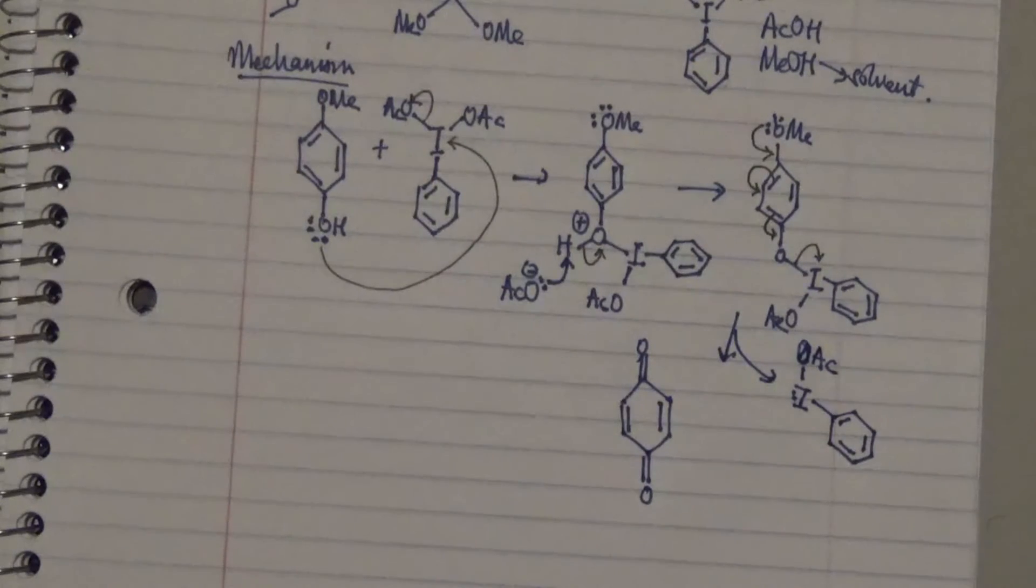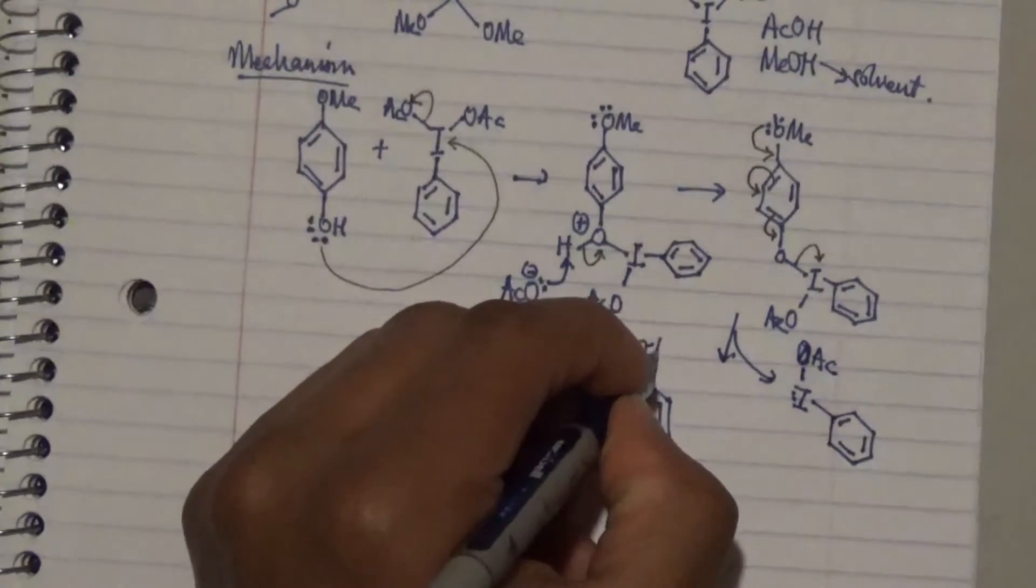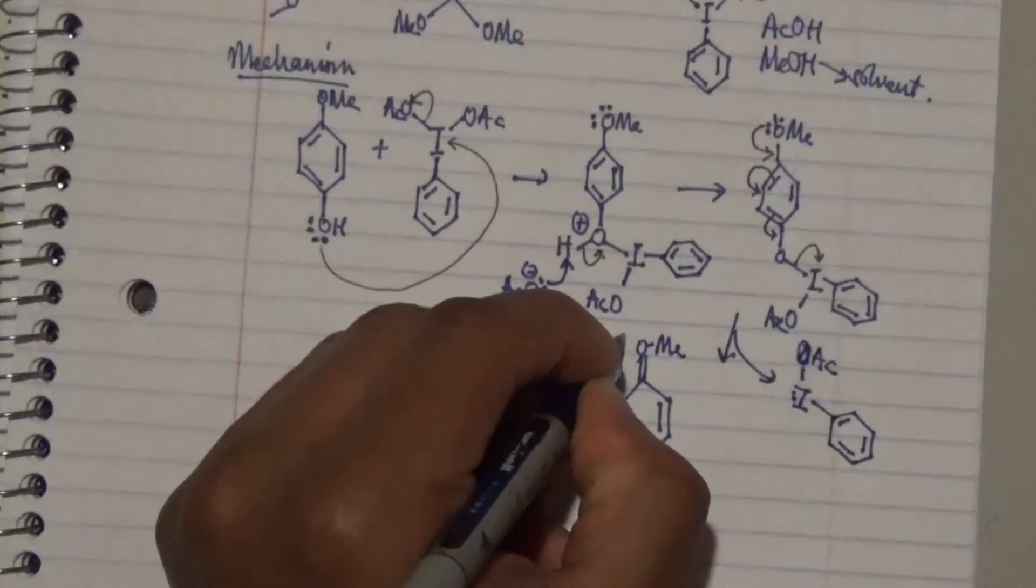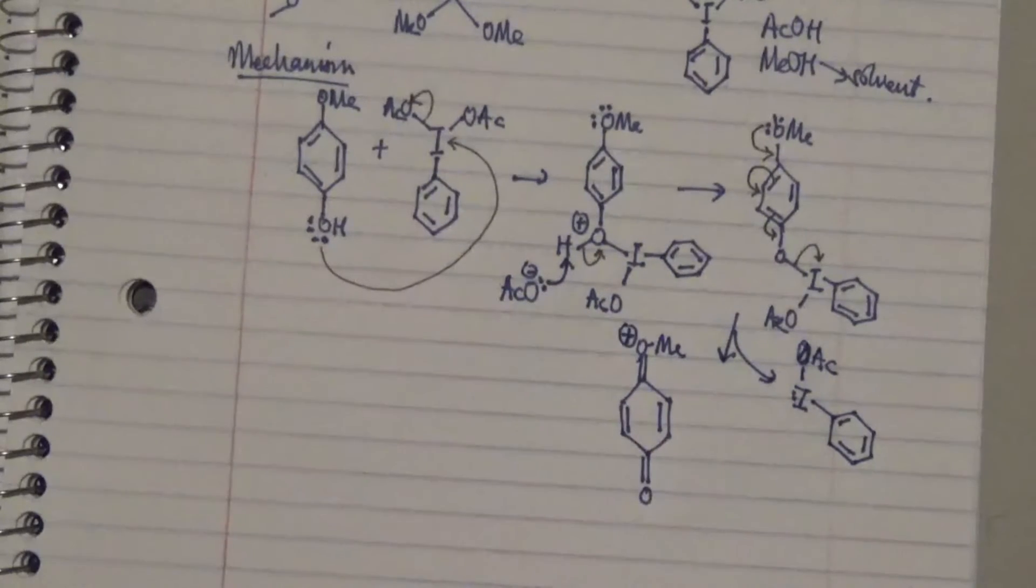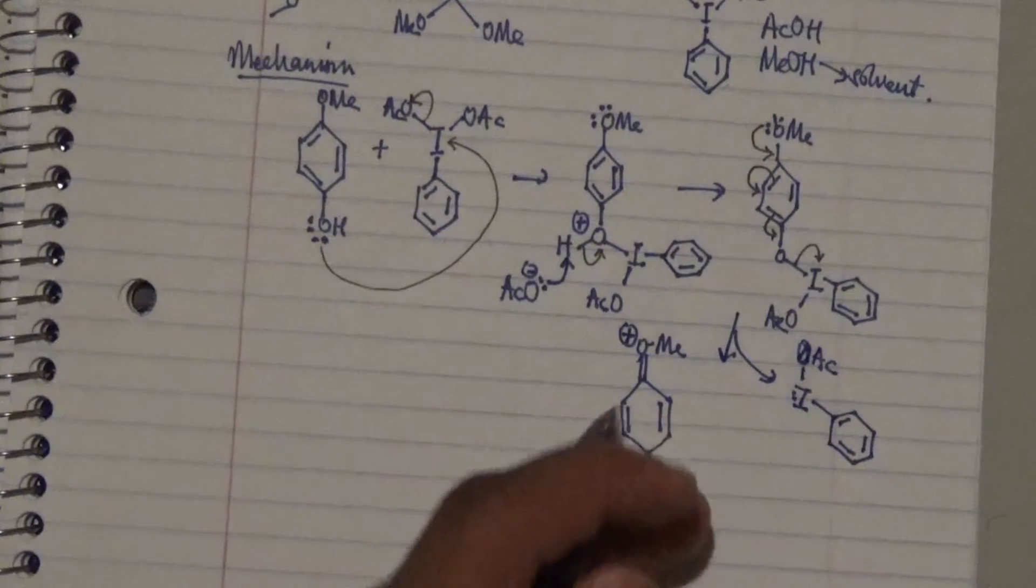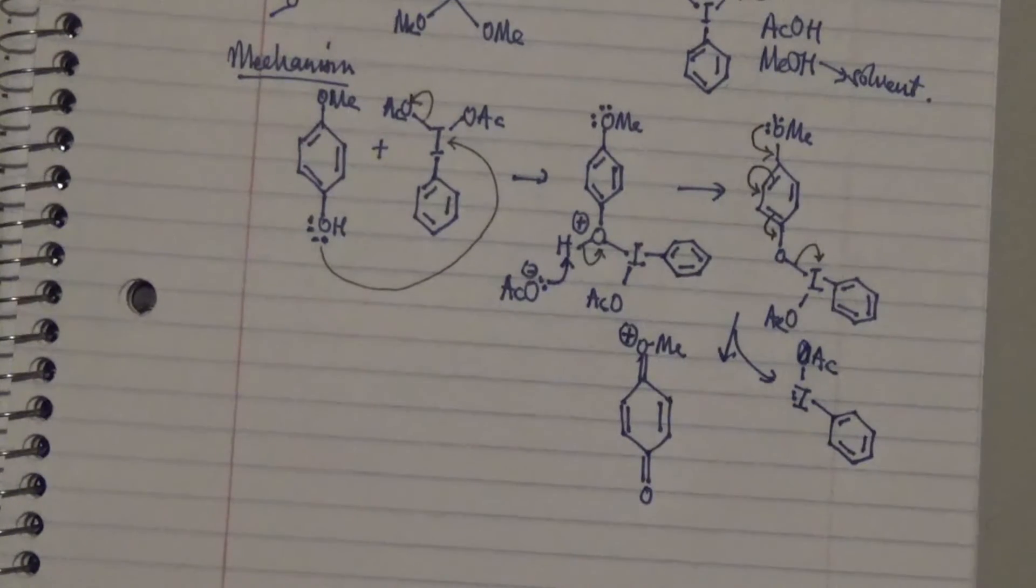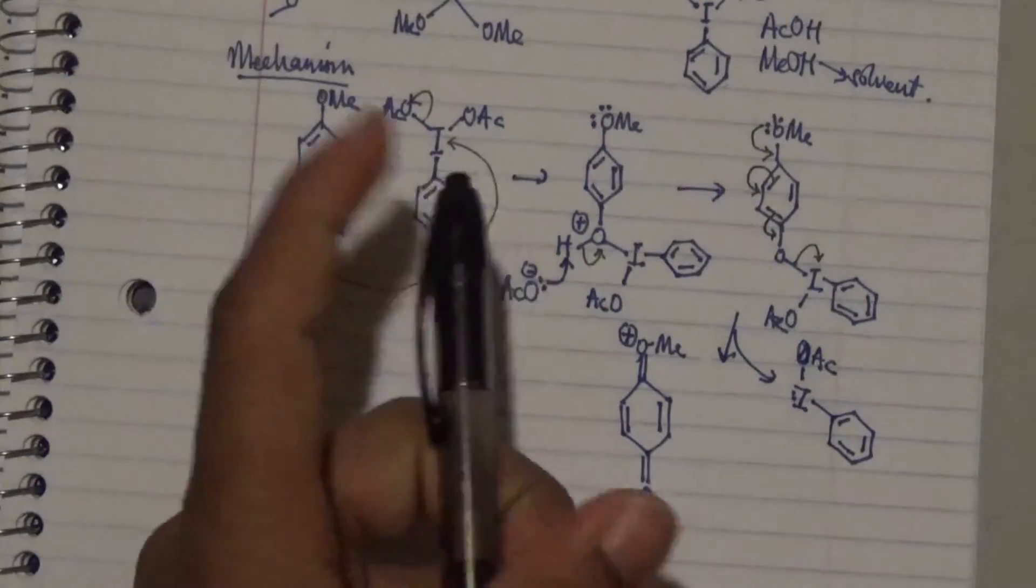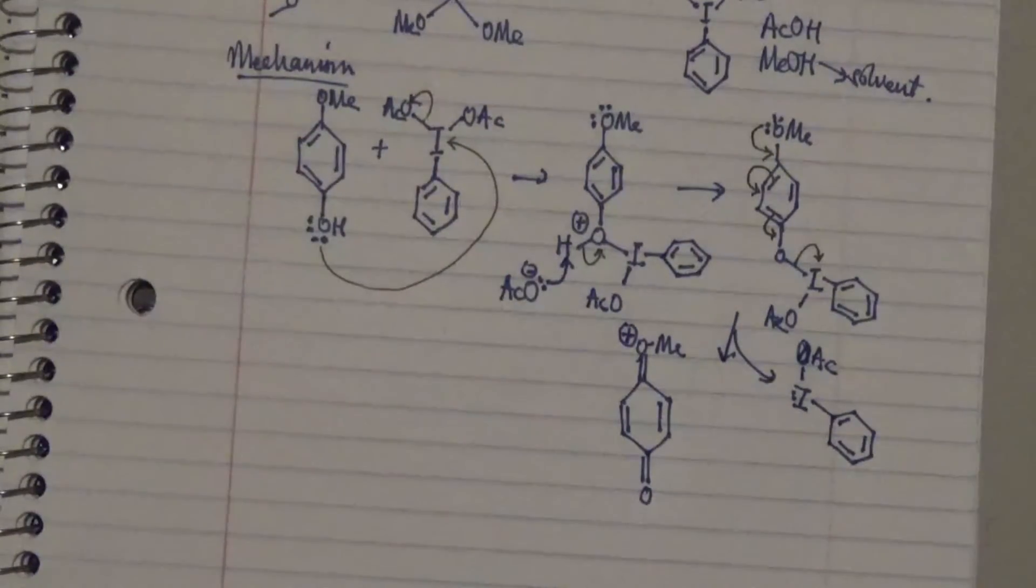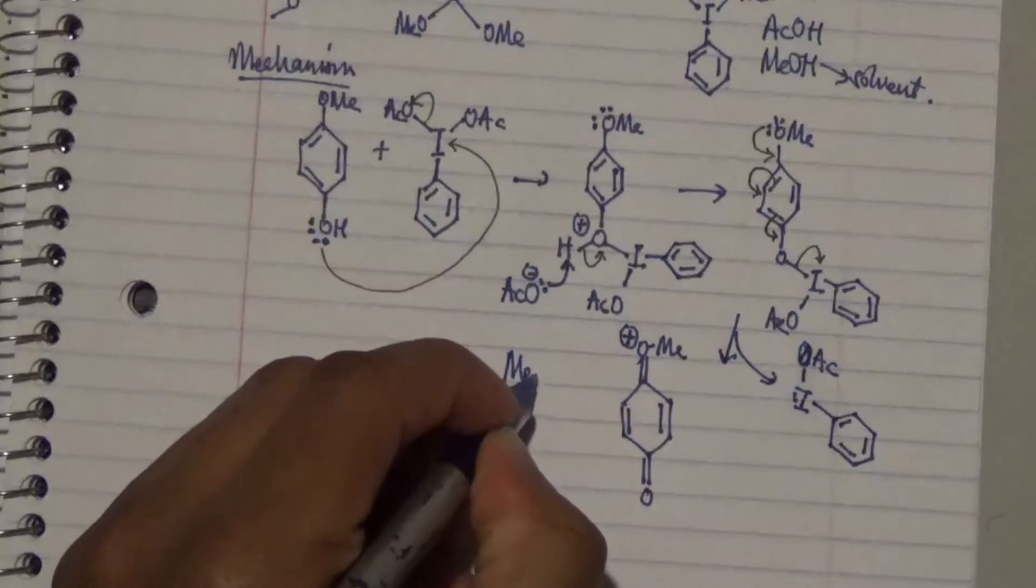You need to note here that there is also a methyl group, and over here there is a positive charge on the oxygen. You also have to realize that this is in a sea of a solvent which is methanol. So methanol comes in with lone pairs on the oxygen.